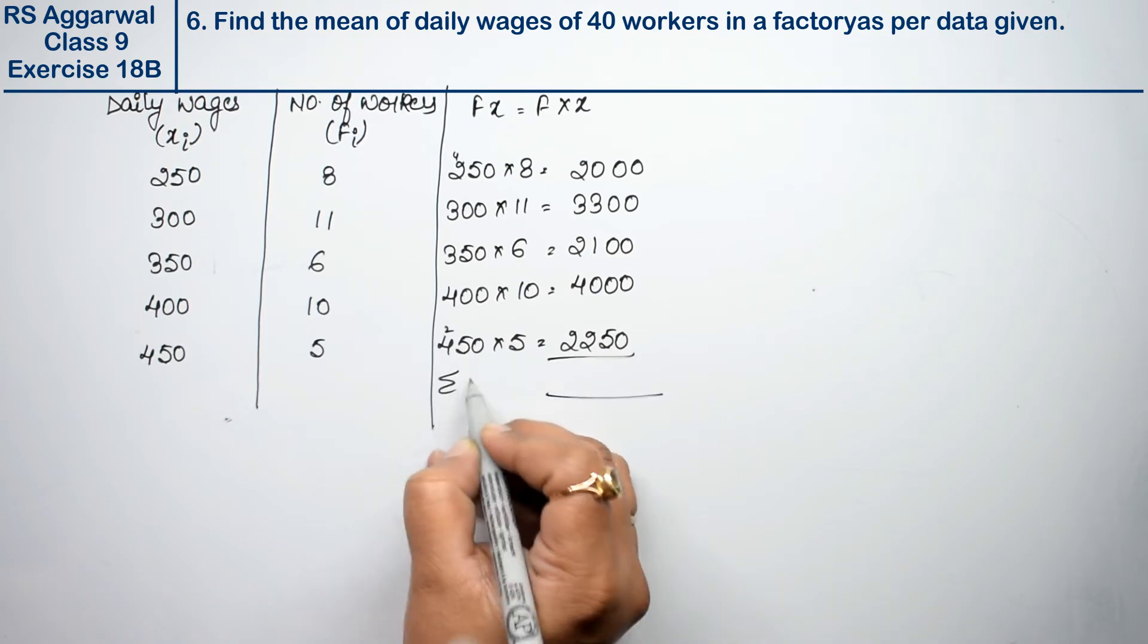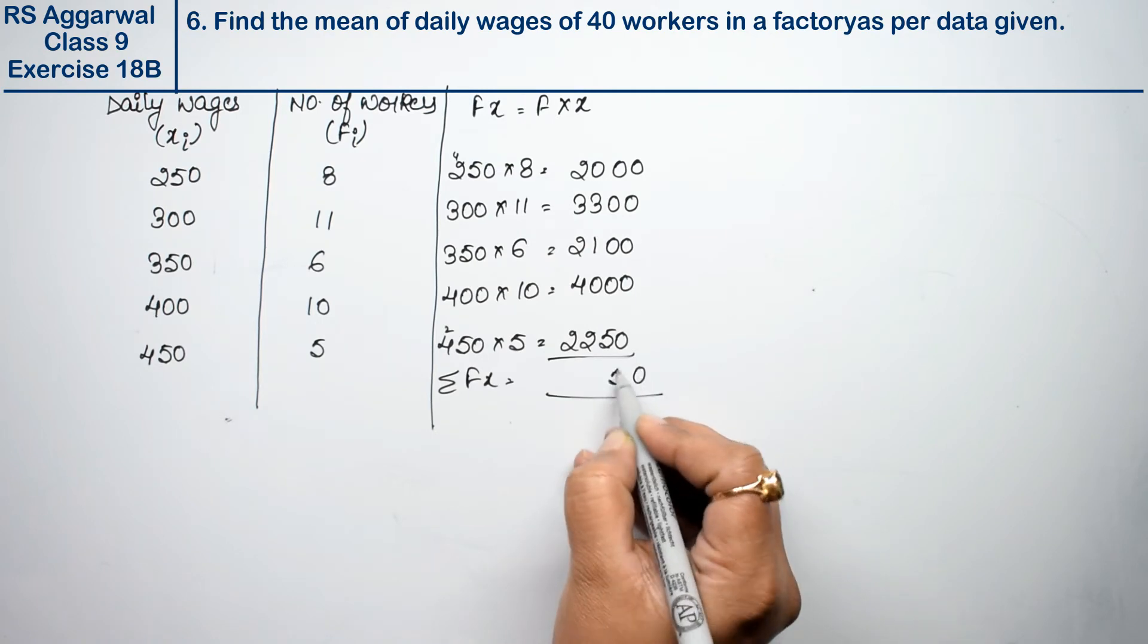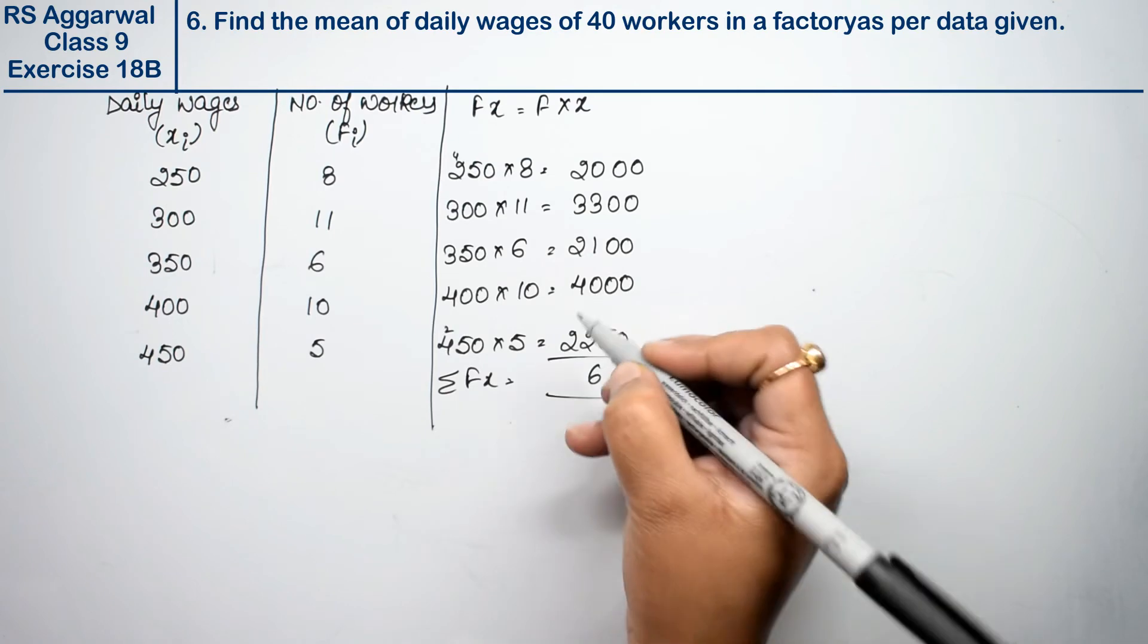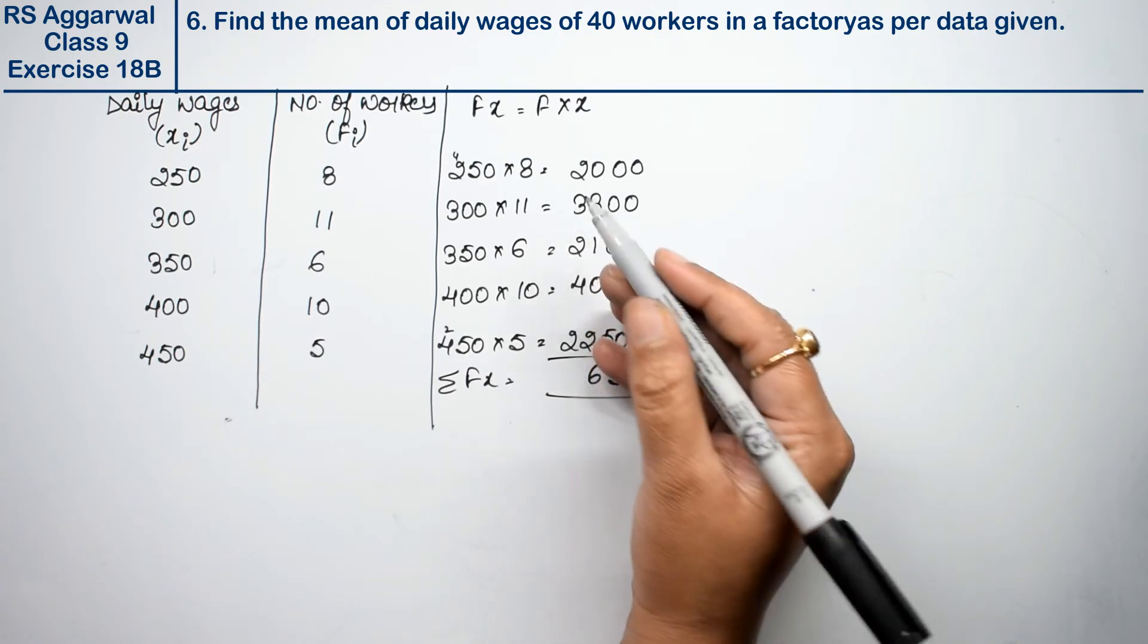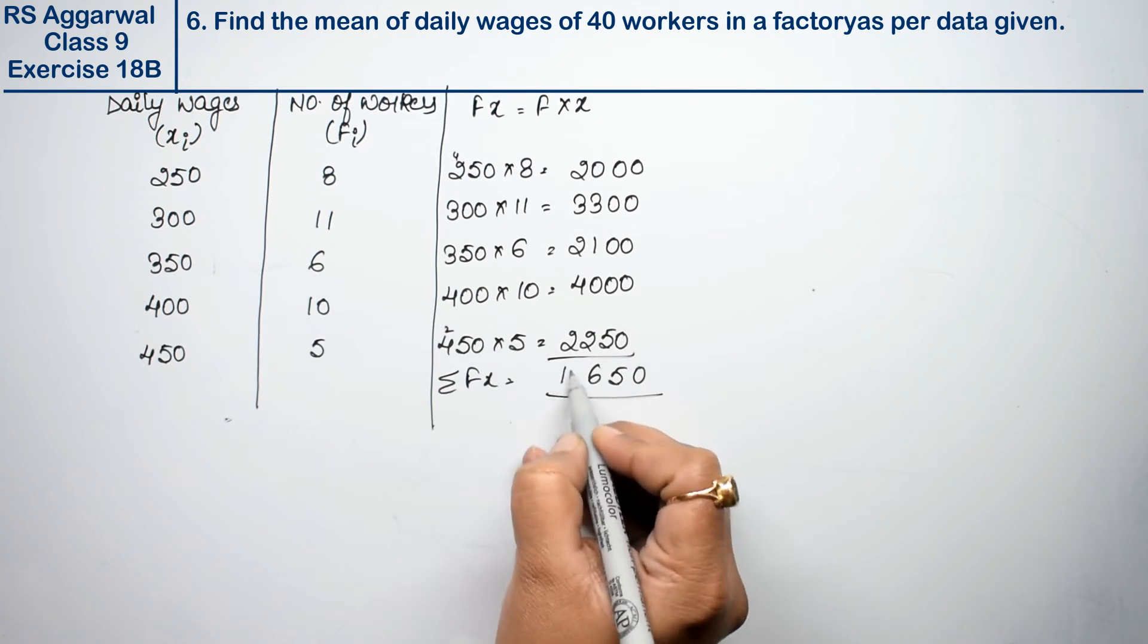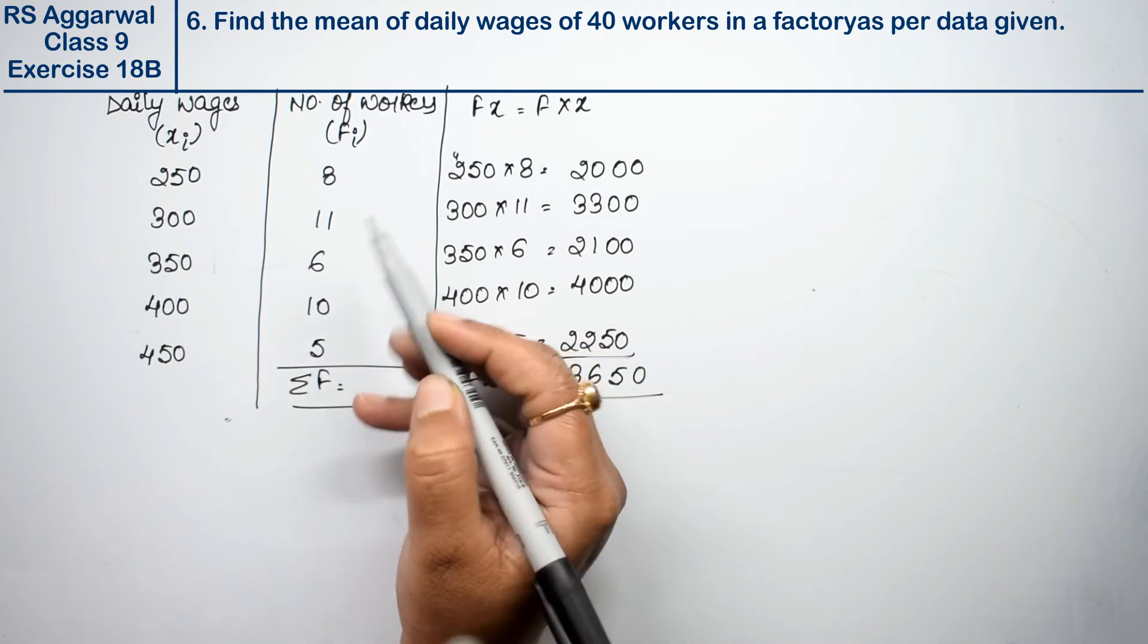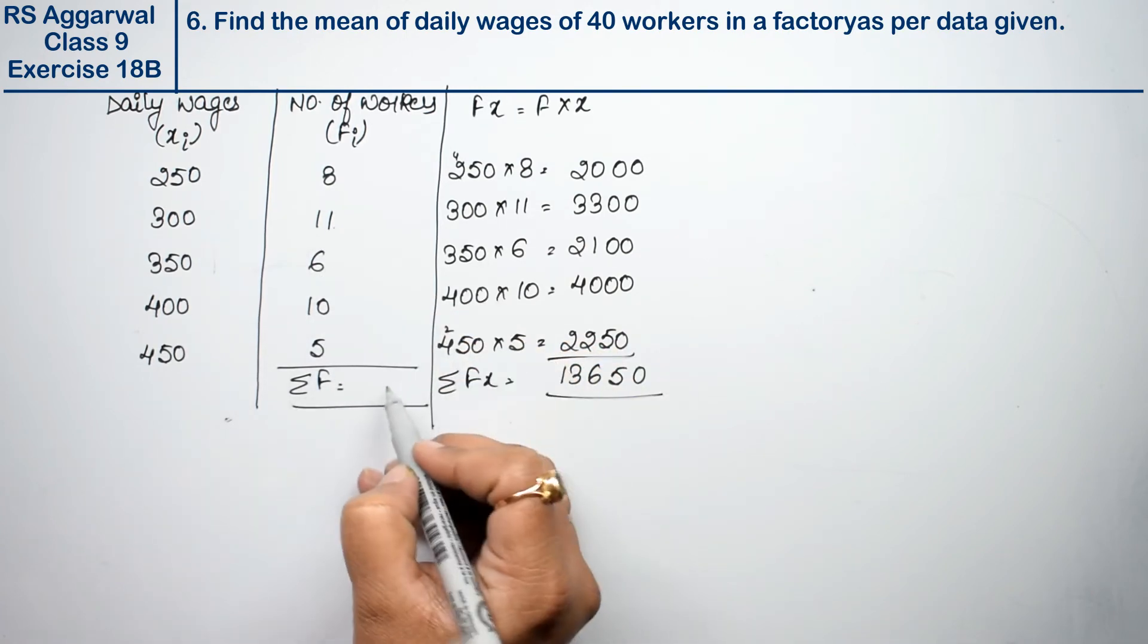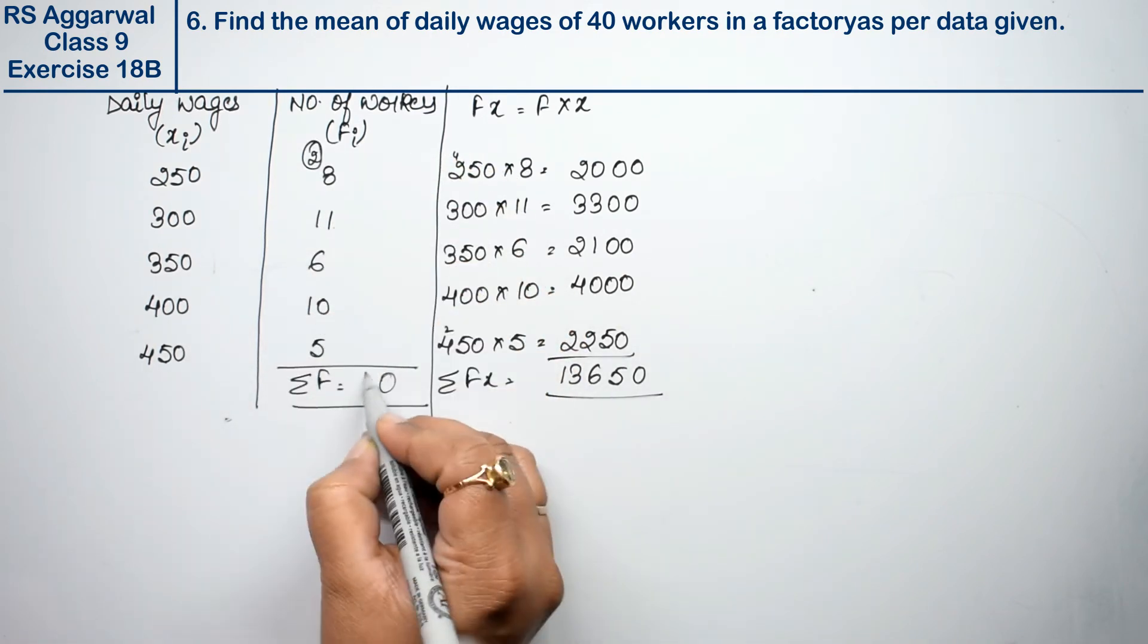Now we will find sigma fx. Sigma fx, last is 0, 5, 2, 3, 6, 2, 4, 6, 7, 8, 9, 10, 11, 12, 12, right? Now we will find sigma f. 8 plus 11 is 19, 25, 30, carry 3, 4 is 40.